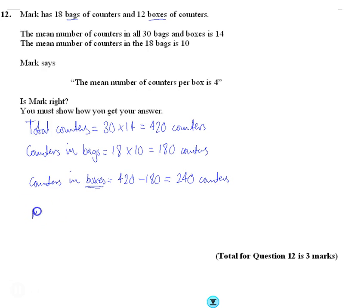So to find the mean number of counters in a box, we're going to take the total number of counters, 240, and then there were 12 boxes. 240 divided by 12 gives us 20. So we think there's an average of 20.